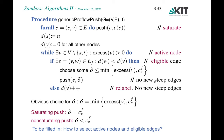We then perform the push operation, which maintains the no-steep-edges invariant since it doesn't change distance values. If there is no eligible edge out of v — meaning all outgoing edges are upward or horizontal — then we relabel v by incrementing its distance, in hopes of eventually getting rid of its excess.